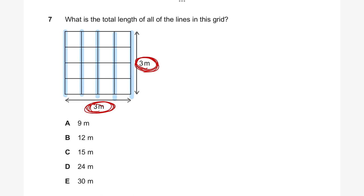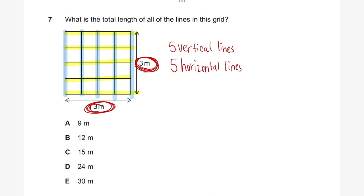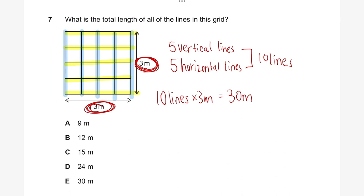And we've also got one, two, three, four, five horizontal lines — five horizontal lines. So in total we've got 10 lines, all three meters each. 10 lines multiplied by three meters equals 30 meters in total, which is why the answer is E, 30 meters.